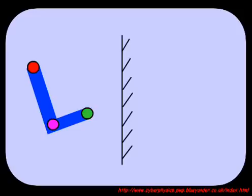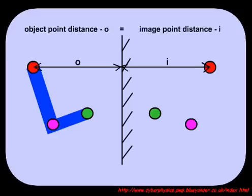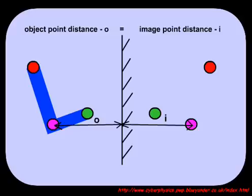We have now reached the point where you have to cheat. Put your image points in as far behind the mirror as the object points are in front. Using colour helps you to do this.